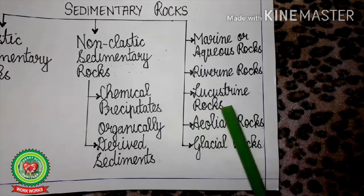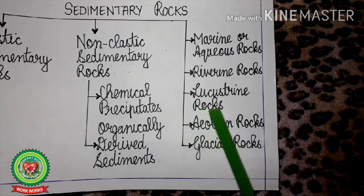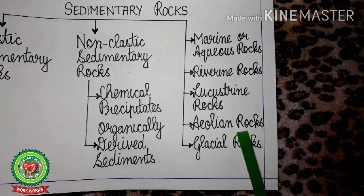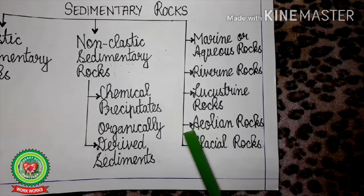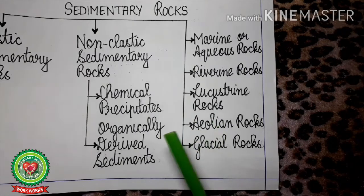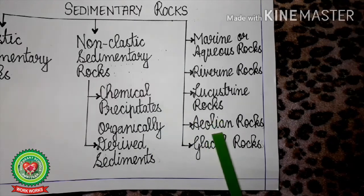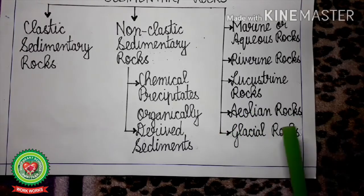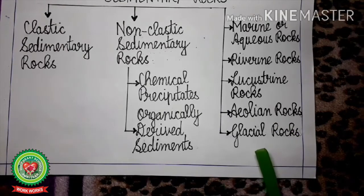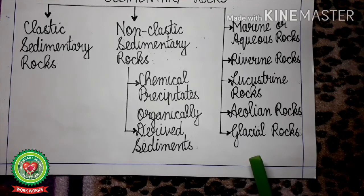Lacustrine rocks are formed by deposition in rivers or lakes — rock salt and gypsum are best examples. Aeolian rocks are formed by wind; loess, made of fine sand particles, is the best example of wind-carried sediment, found in Northwest China and the Thar Desert of India. Glacial rocks are formed by the depositional work of glaciers — slow-moving rivers of ice and snow — which carry clay and large boulders and deposit them in foothills, as seen in Northern Europe.